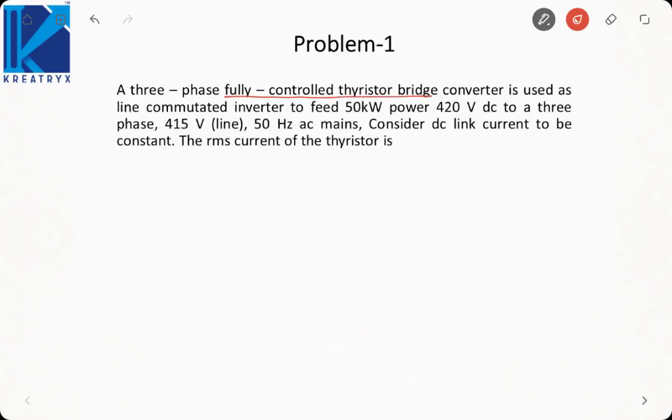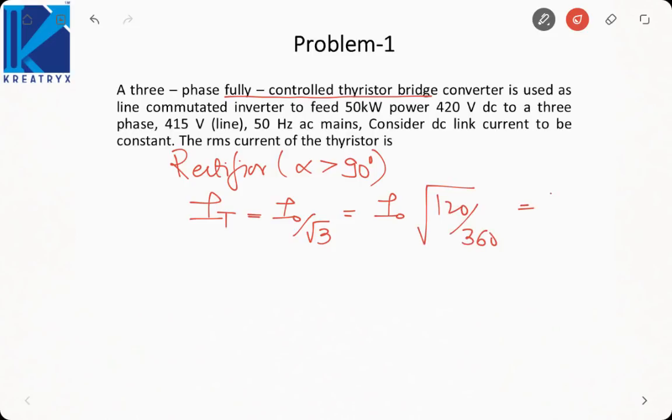Line commutated inverter means rectifier, but with alpha greater than 90 degrees. I know in a rectifier thyristor current is equal to I0 by root 3, because any thyristor conducts only for 120 degree duration out of 360 degrees. Then that means first I need to calculate this I0. Now I have been given the power as well as the DC voltage, so I can calculate I0.